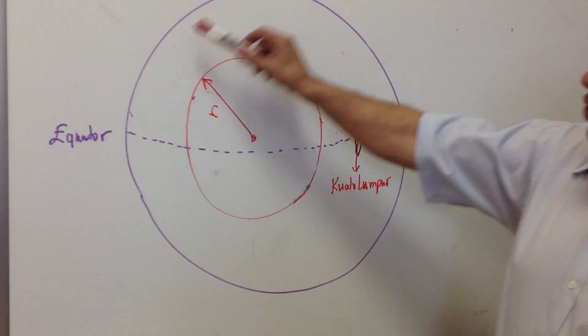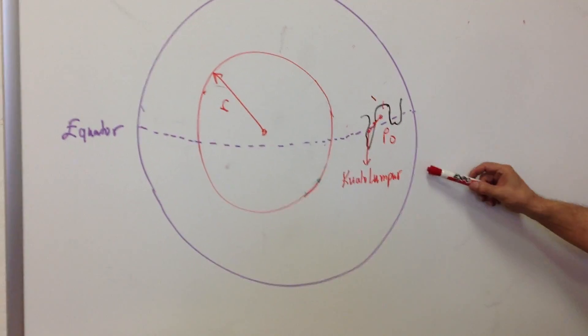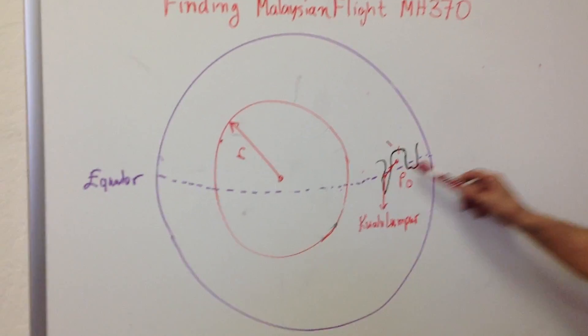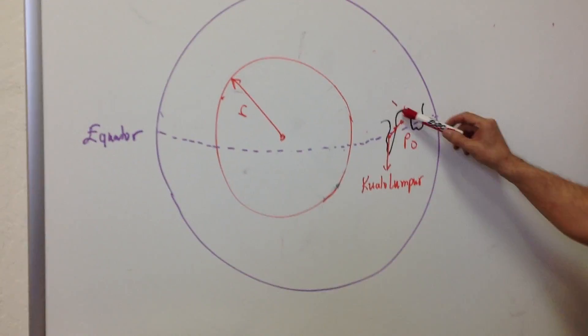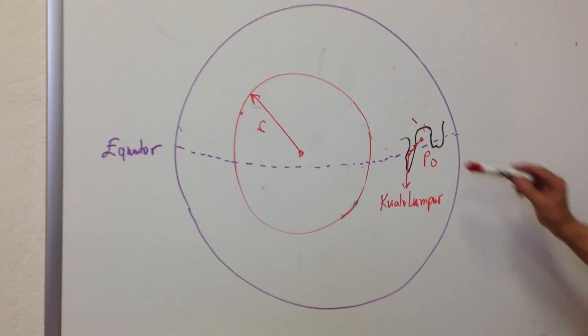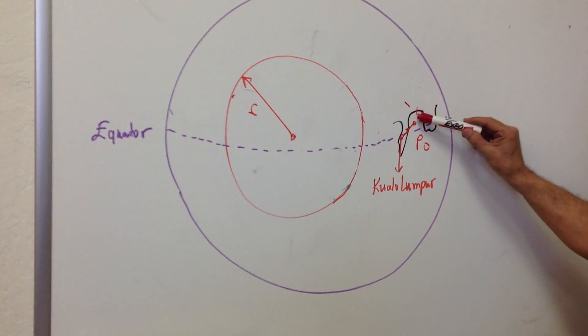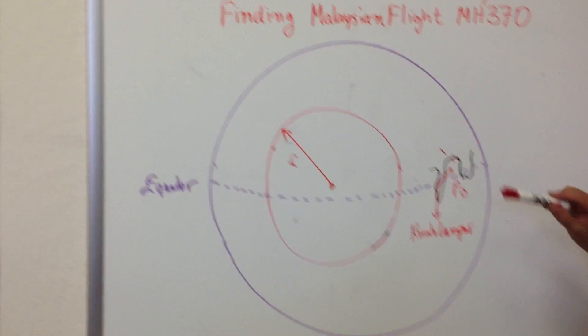I would like to give a mathematical formulation for finding Malaysian Flight MH370, which became a mystery flight for the last couple of days. This is the Earth, drawn in purple. Here's the equator. In black, we have a map showing the Malaysian Peninsula, South China Sea, and Vietnam.